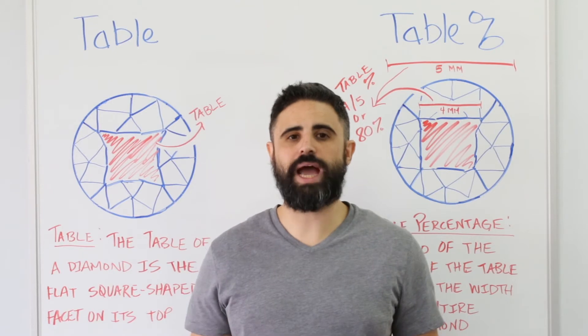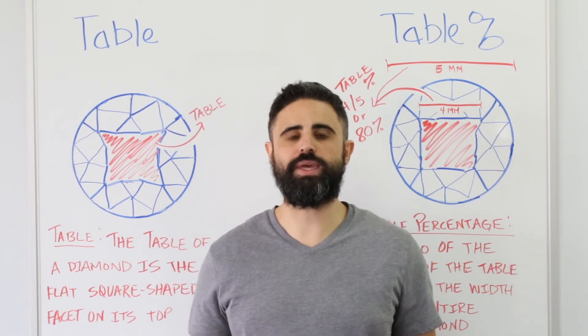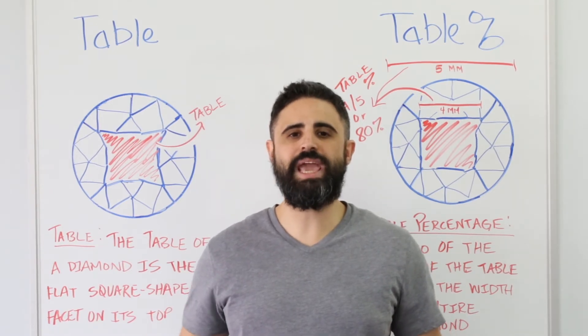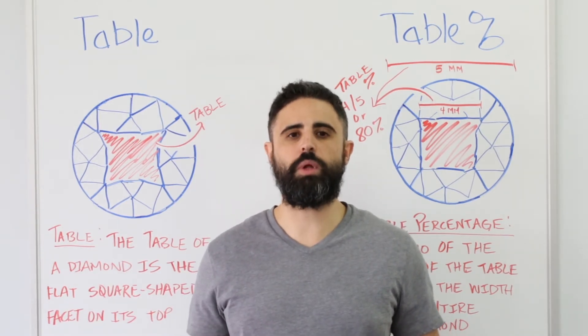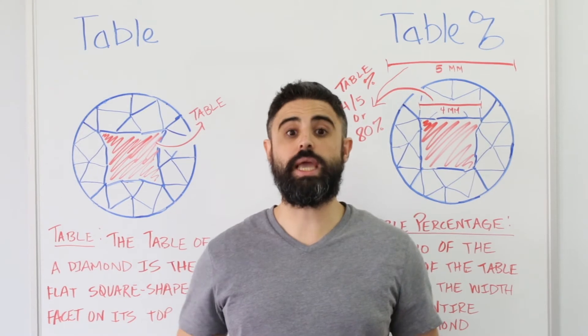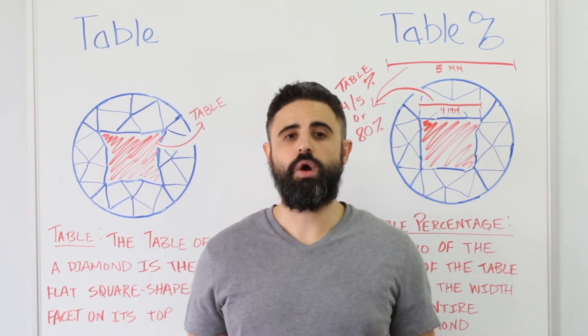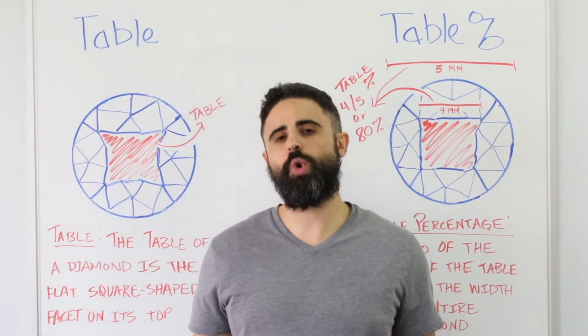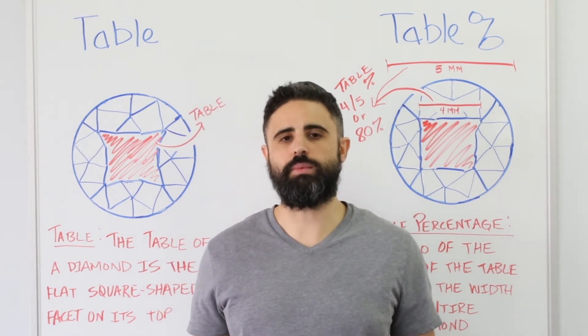For example, if the diamond's top width is 5mm and its table width is 4mm, the table percentage is 80%. So, what are the common questions about diamond table?